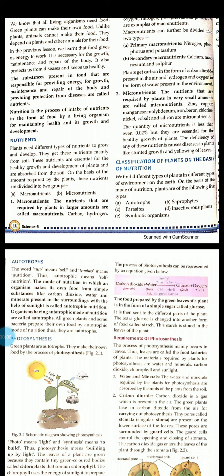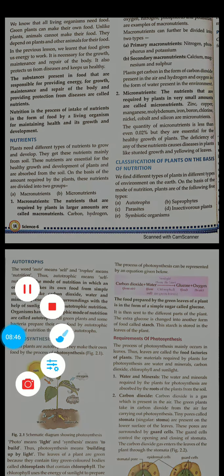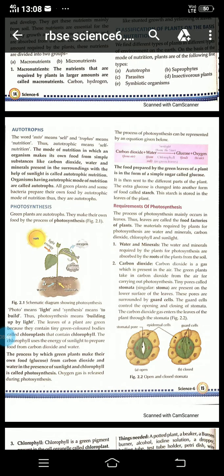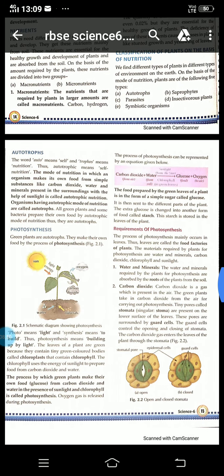Just as our body faces problems when we don't get nutrients, plants also suffer. Their growth is stunted and their leaves turn yellow. The next topic is classification of plants on the basis of nutrition.